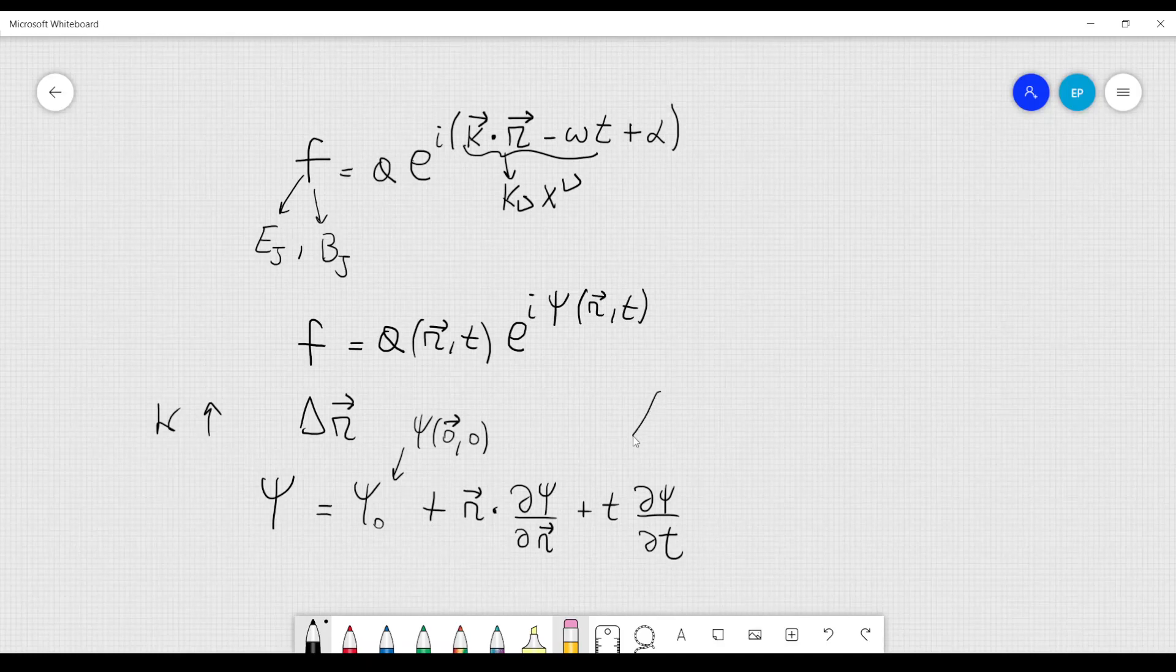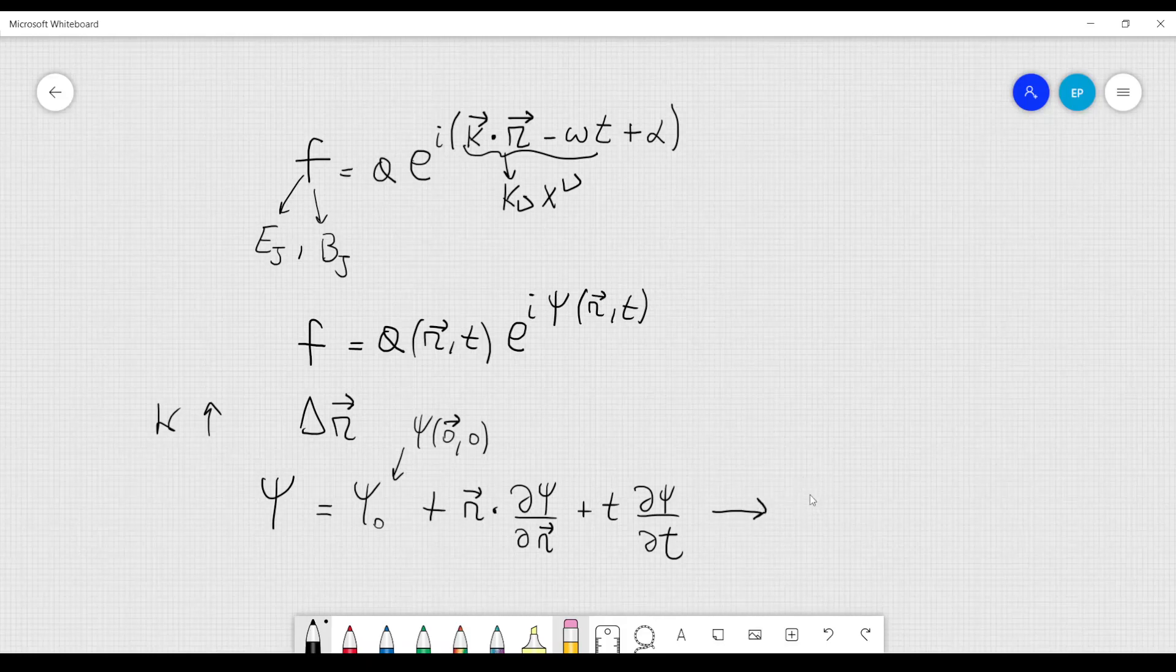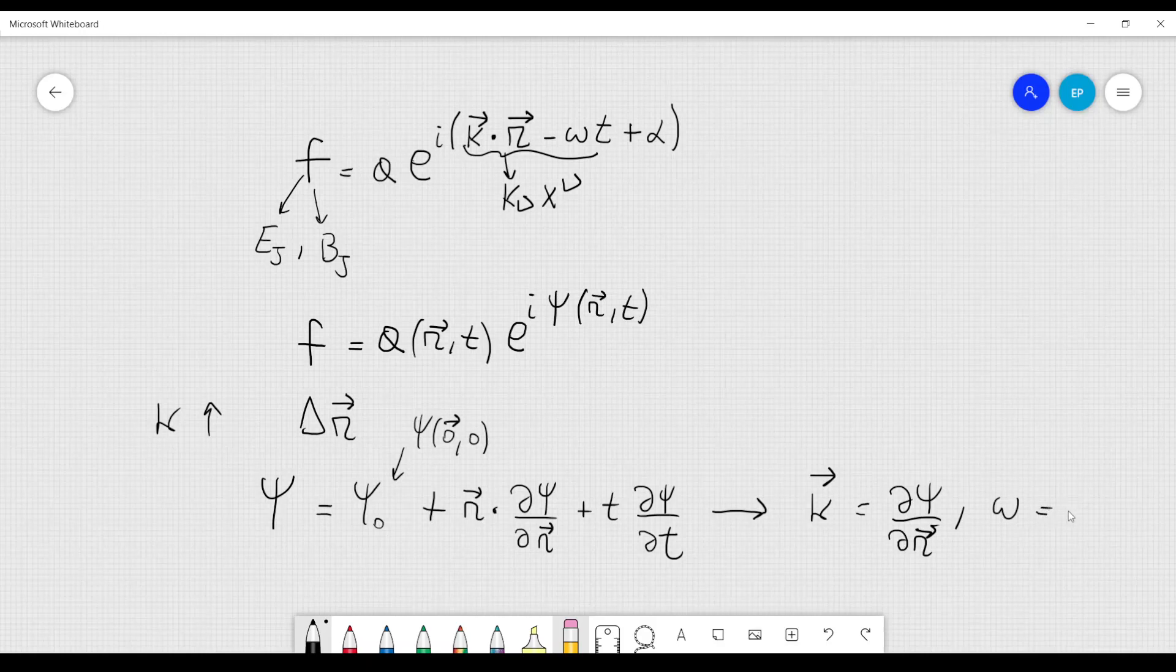Therefore we can make this approximation here, and therefore we can consider displacements to be small enough, so that we can expand psi into a Taylor series. And now if we write it in this fashion, we see that there is a very marked similarity with this expression here, so from here we see that k, the vector k should be equal to the gradient of psi, d psi dr, and omega should be minus d psi over dt.